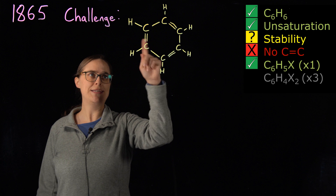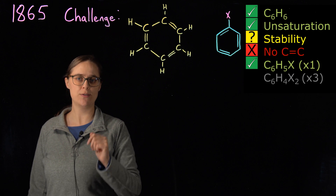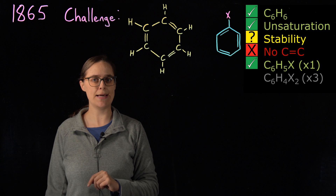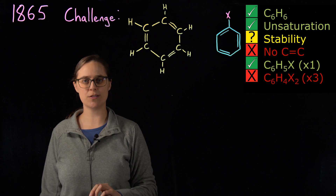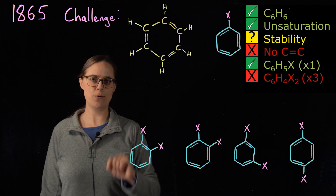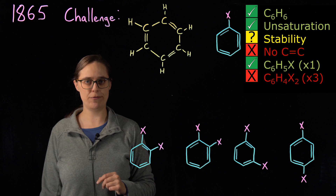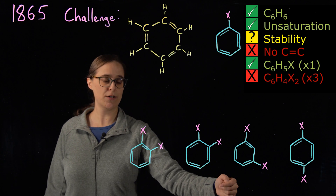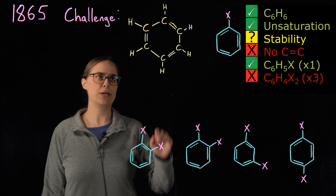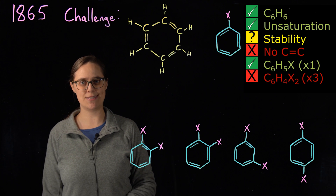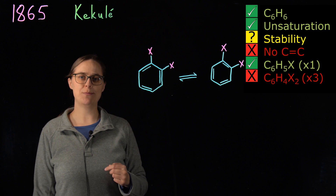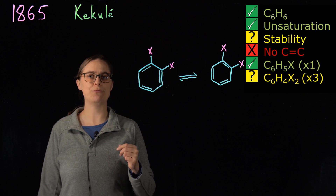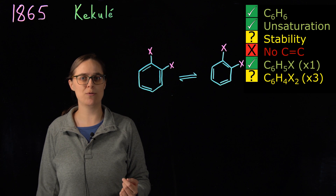In 1865, the German chemist Friedrich Kekulé proposed that our two different 1,2-di-substituted products of benzene are in rapid equilibrium, so we just can't distinguish or separate them from each other. This was Kekulé's attempt to reconcile the second structure with the substitution data.